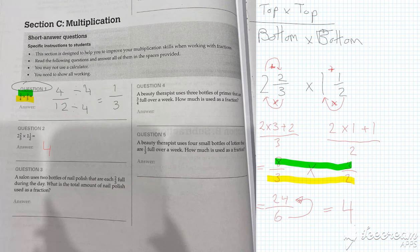So then if we go to question 3, a salon uses 2 bottles of nail polish and each of them are 2 thirds full. Now with this question, there's just one little thing we need to know, and that's fractions and whole numbers. So this is the number 2 for 2 wholes times by 2 thirds.